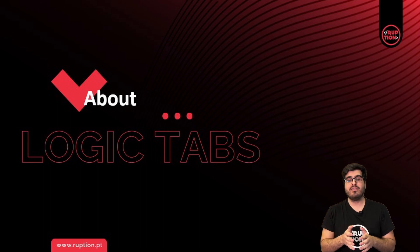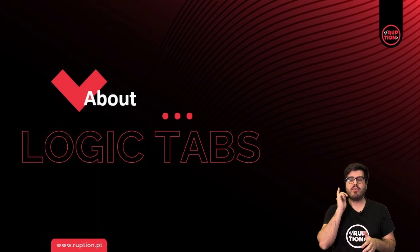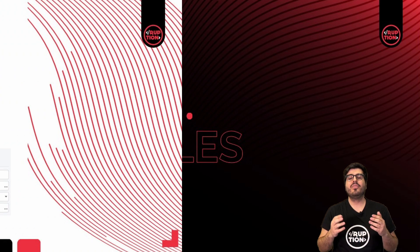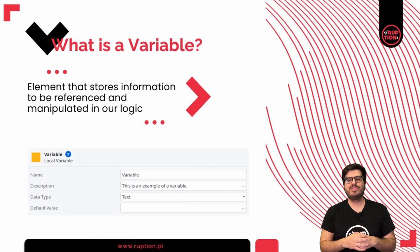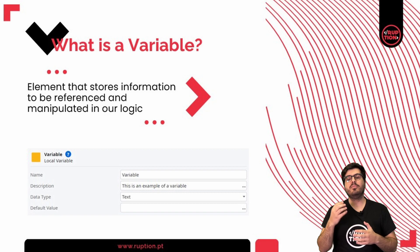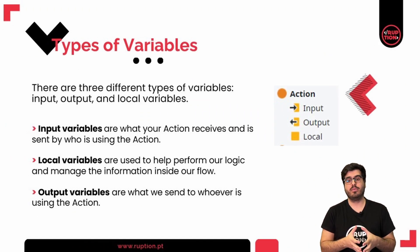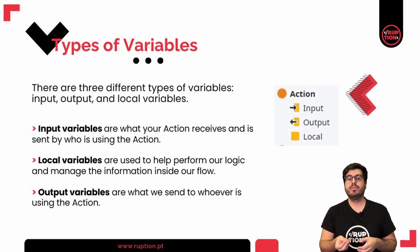Before we take a deep dive into each section, let's talk about variables since they are essential to your Logic. Variables are used to store information, to be referenced and manipulated in our Logic. We have three different types of variables: input, output, and local variables.